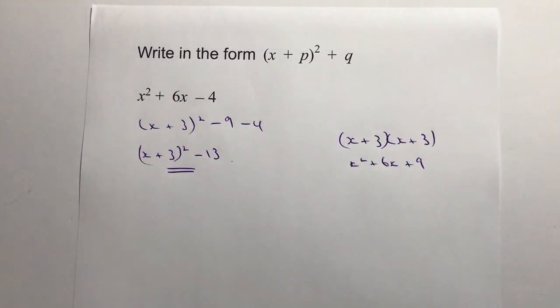So I can write this as x plus 3 squared minus 9 minus 4 is minus 13. And actually that's the answer to the question.